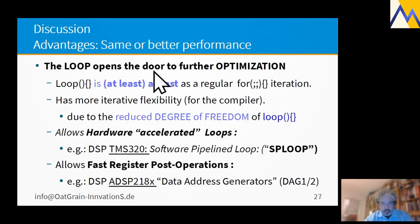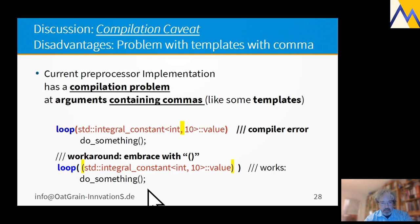The loop opens the door to further optimization. This is not implemented in current compilers. But a regular loop statement is at least as fast as a regular for iteration. And it has more iterative flexibility for the compiler due to the reduced degree of freedom. For example, it allows hardware accelerated loops like the TMS 320, the software pipeline loops, or the fast register operations for the ADSP 218.